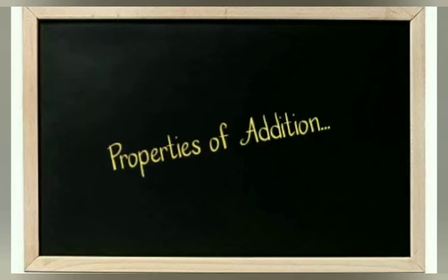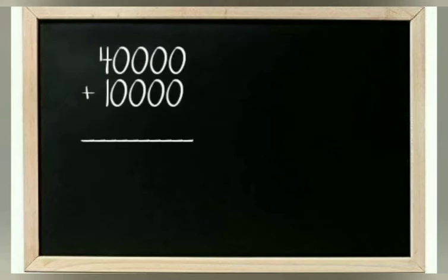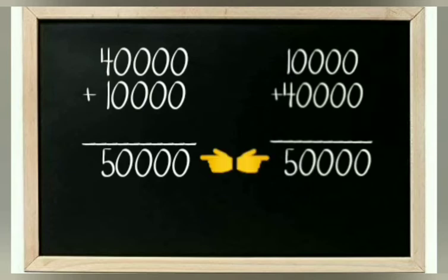Property of addition — Order property of addition: if we change the order of the addends there is no change in the sum. For example, 40,000 plus 10,000 gives a sum of 50,000. If the addends are interchanged, the sum remains the same.